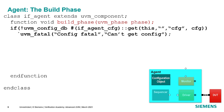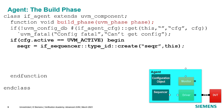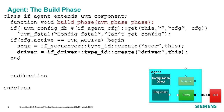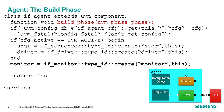Regardless of whether the agent is active or passive, we allocate the monitor. There can be other things like coverage collectors inside your agent, but we won't cover those here. In the connect phase, we pass the virtual interface from the config object down to the monitor, connecting it to the DUT. The top-level analysis port is assigned to the monitor's analysis port. If the agent is active, we connect the driver to the sequencer and pass the virtual interface down to the driver.